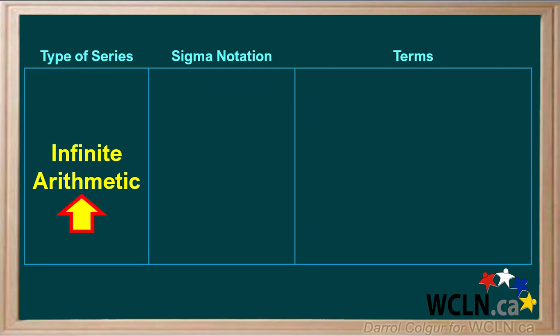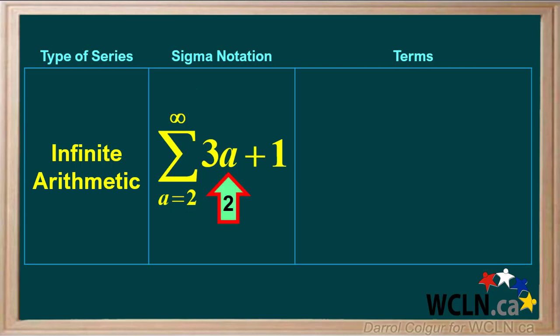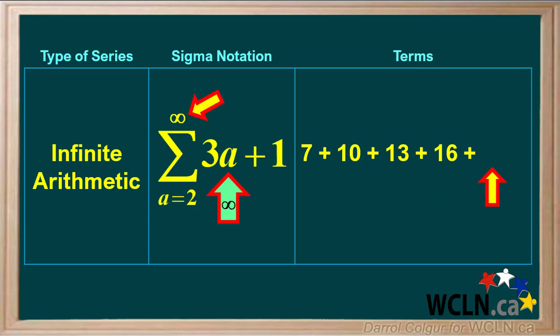The second type of series we'll look at is an infinite arithmetic series. The value for a in the first term is 2, and the infinity symbol shows there are an infinite number of terms. Substituting 2 for a gives a first term of 7. For the second term, a equals 3, so the value is 10. For the third term, a equals 4, giving 13. And for the next term, a equals 5, giving 16. The infinity symbol on top of sigma tells us that this series goes on forever until a is infinitely large.